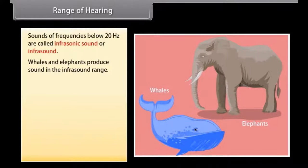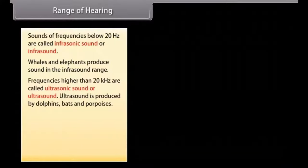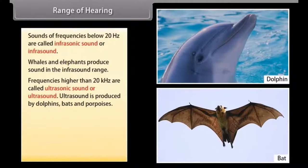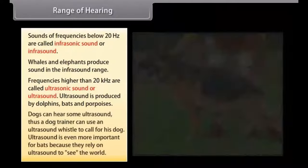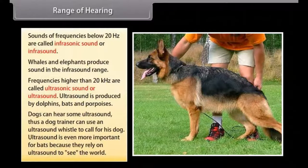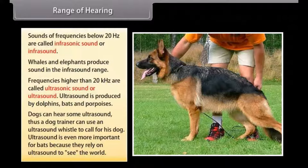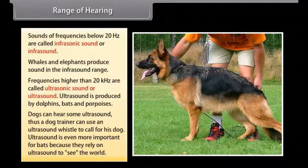Sounds of frequencies below 20 hertz are called infrasonic sound or infrasound. Some animals like whales and elephants produce sounds in the infrasound range. Frequencies higher than 20 kilohertz are called ultrasonic sound or ultrasound. Dogs can hear some ultrasound thus a dog trainer can use an ultrasound whistle to call his dog. Ultrasound is even more important for bats because they rely on ultrasound to see the world.